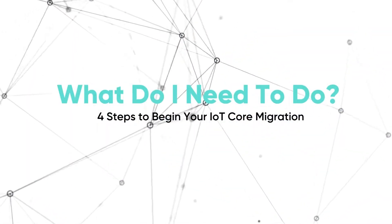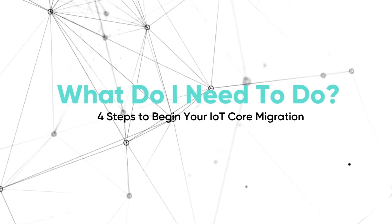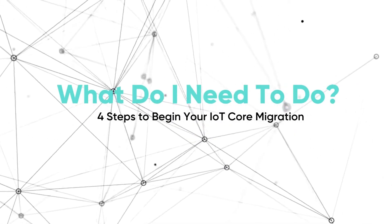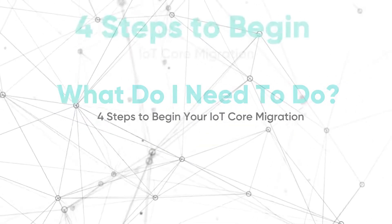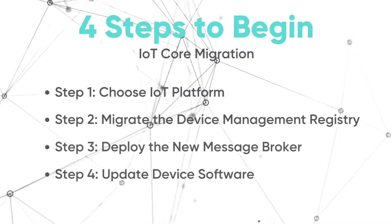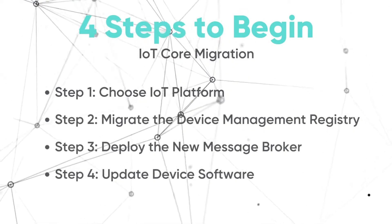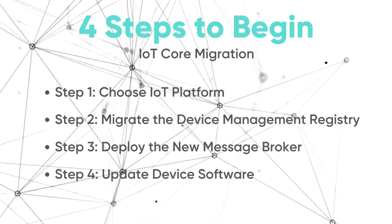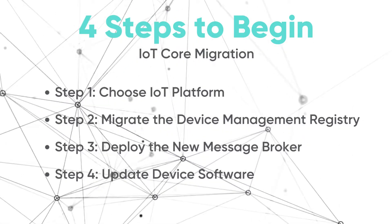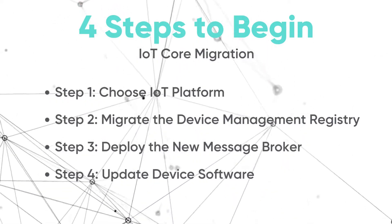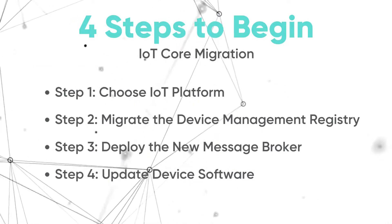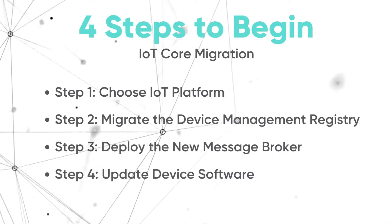If you want to move away from IoT Core, here's what you need to do in the four steps required for migrating to an IoT Core alternative. Step one: choose an IoT platform. Step two: migrate the device management registry. Step three: deploy the new message broker. And step four: update the device software. Let's break these steps down.